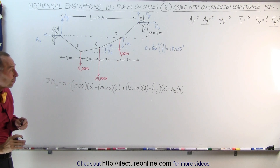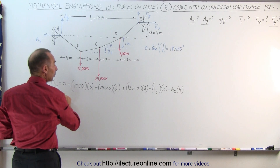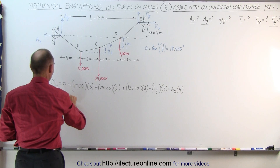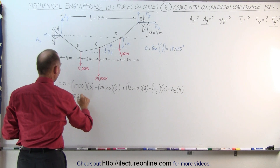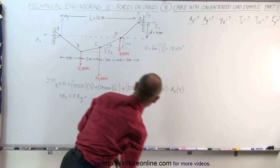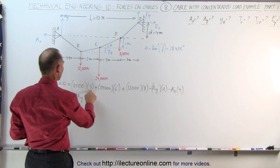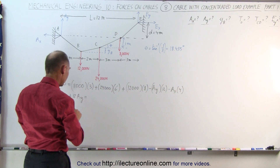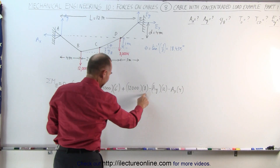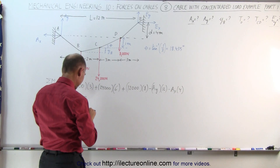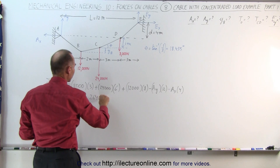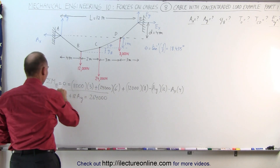Solving for A sub Y and A sub X, we move terms over and get: 4 A sub X plus 12 A sub Y equals 3 times 8,000 which is 24,000, plus 6 times 24,000 which is 144,000, plus 8 times 12,000 which is 96,000. That gives us 264,000. That's our first equation.